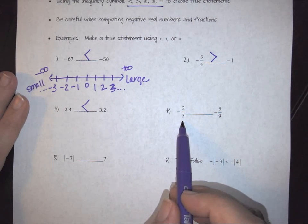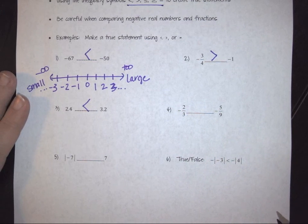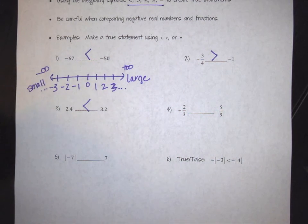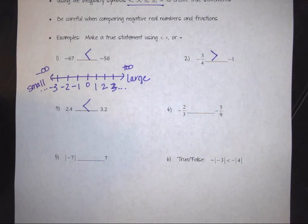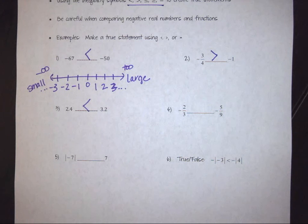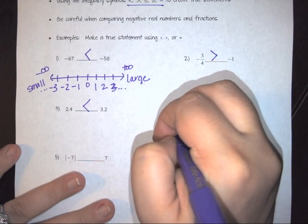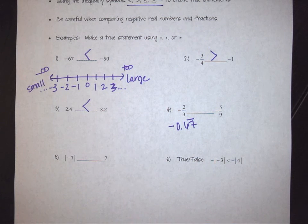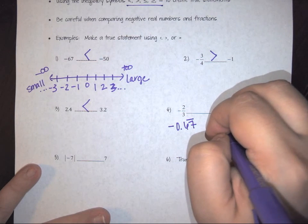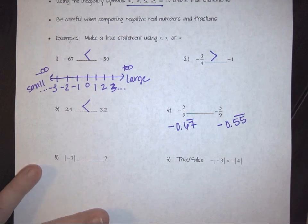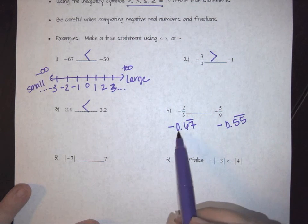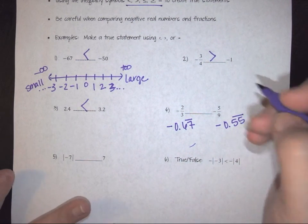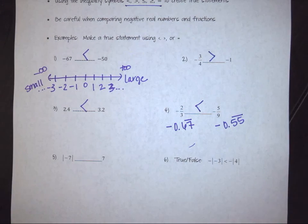When dealing with fractions like 2/3 and 5/9, one of the easiest things to do if you can't work it out in your head is to translate them into decimals — never assume. Two-thirds converts to approximately negative 0.67 repeating, and five-ninths converts to approximately negative 0.55 repeating. Even with decimals, the bigger the negative number, the smaller the value actually is, so we go in the less-than direction.